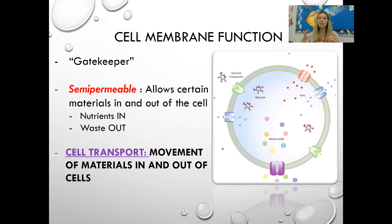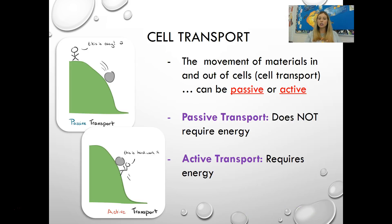Cell transport is the movement of materials in and out of the cell. There are two types: passive and active. The biggest difference is that passive cell transport does not require the use of energy, while active cell transport does require energy. Let's talk about why passive transport doesn't require energy but active transport does.